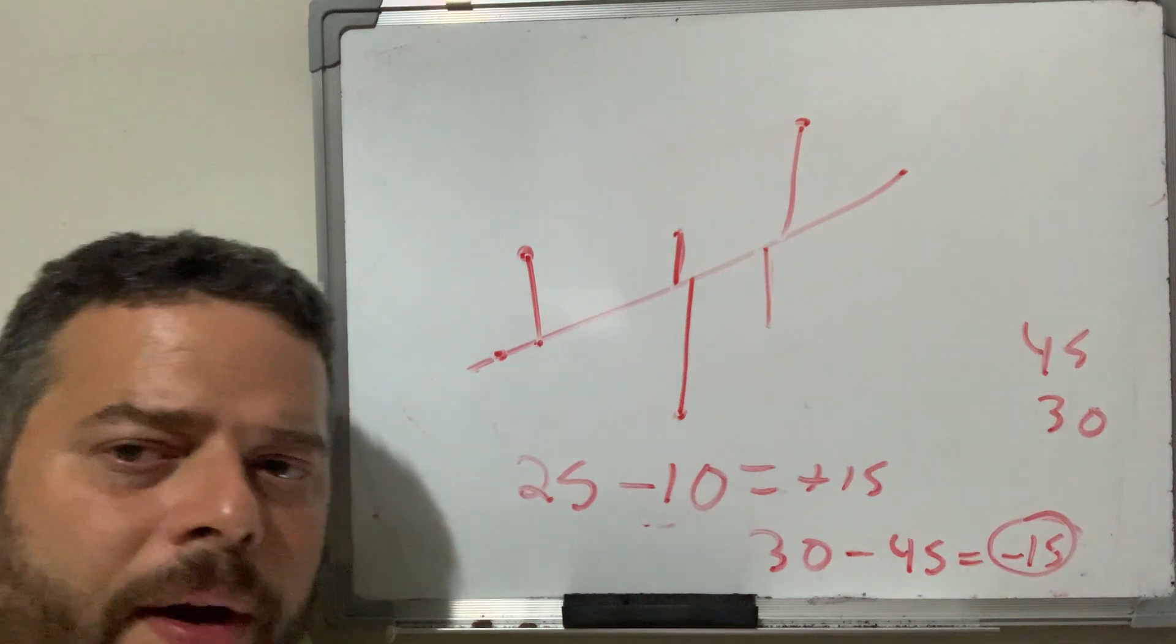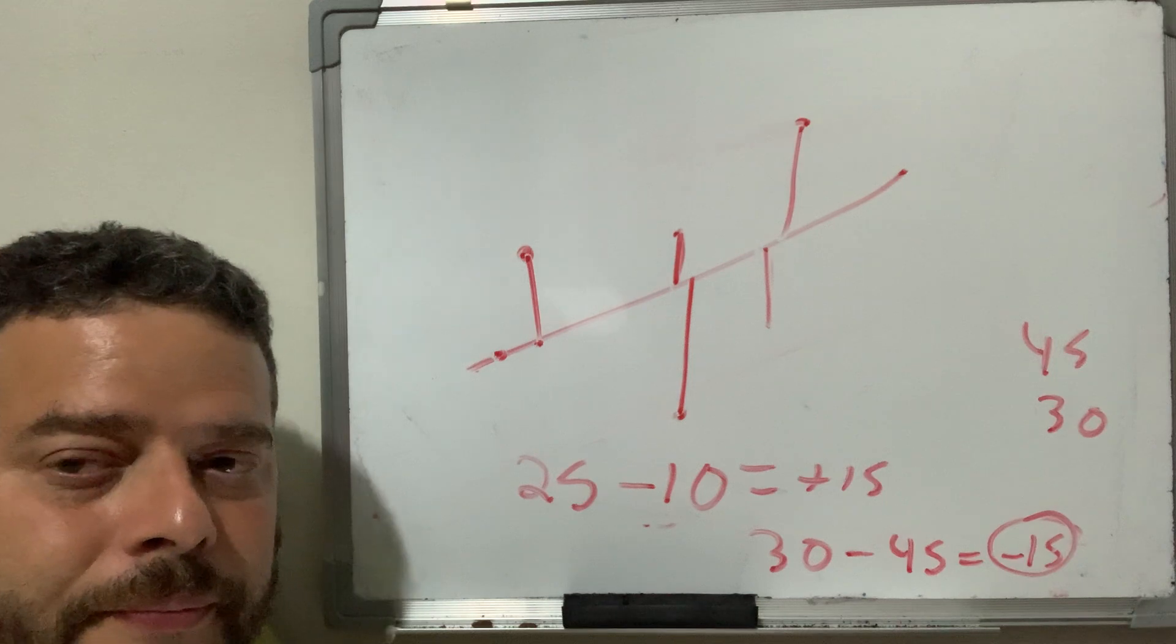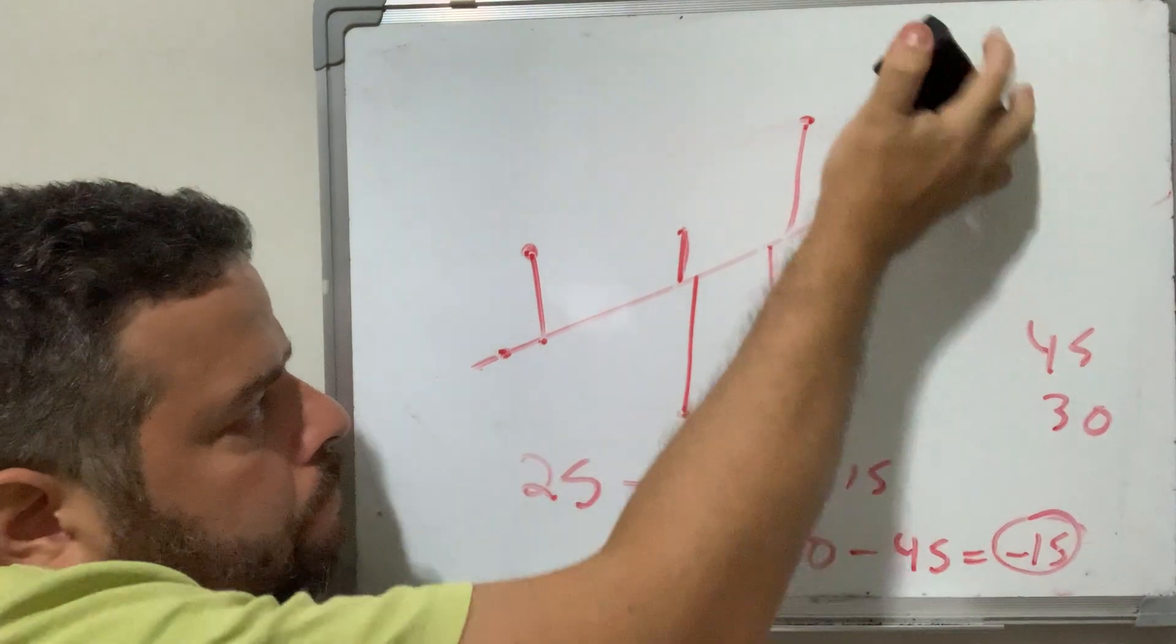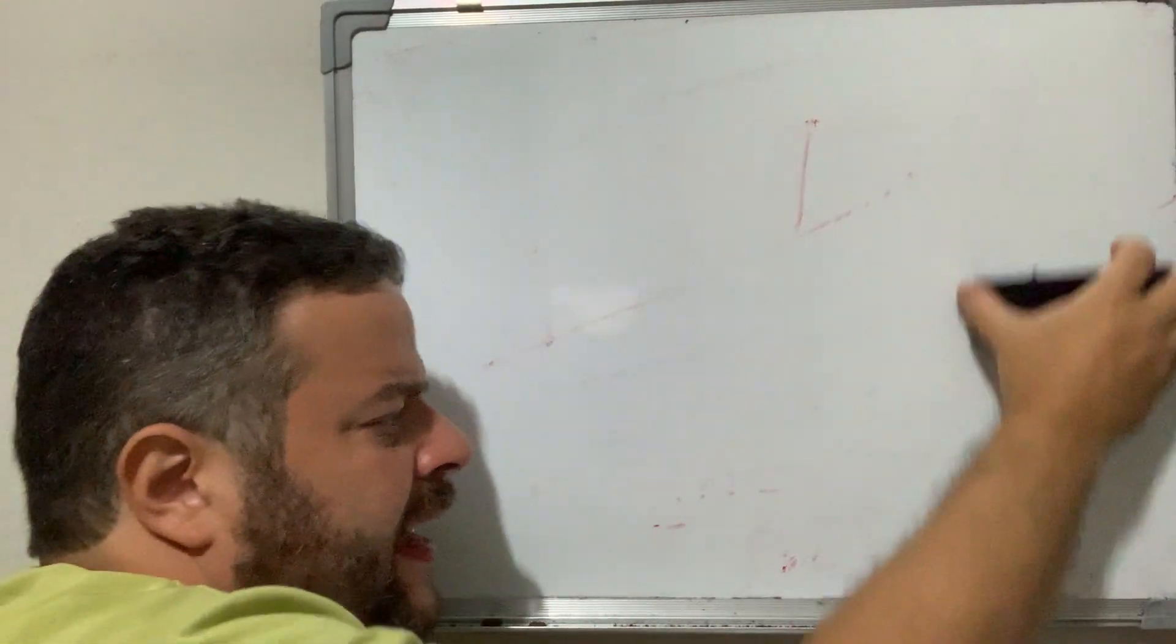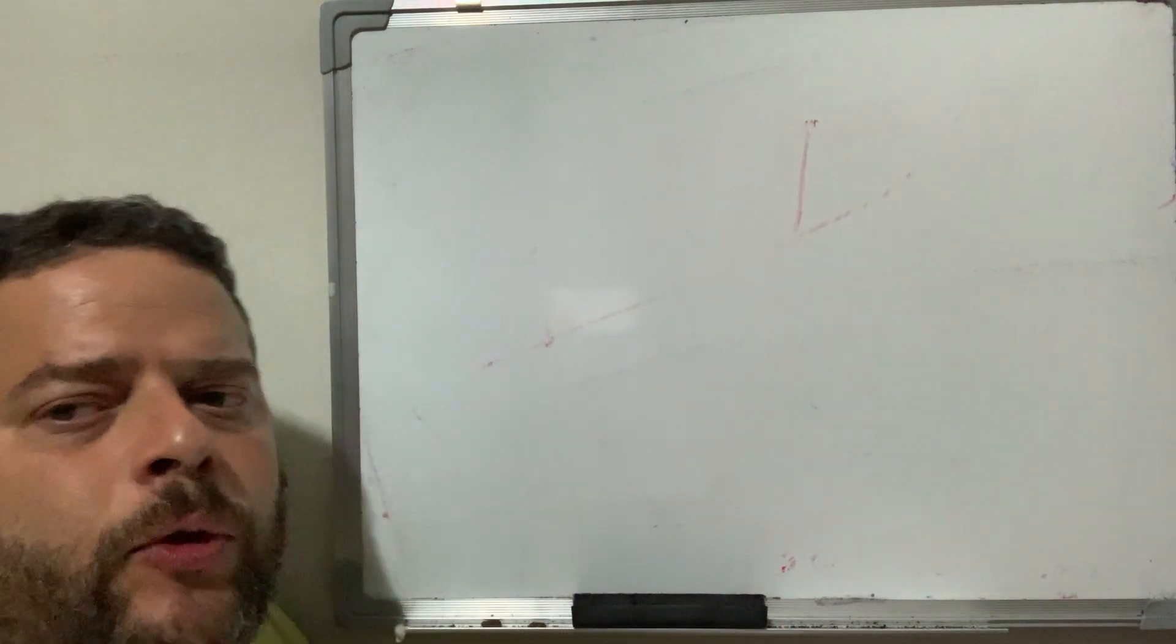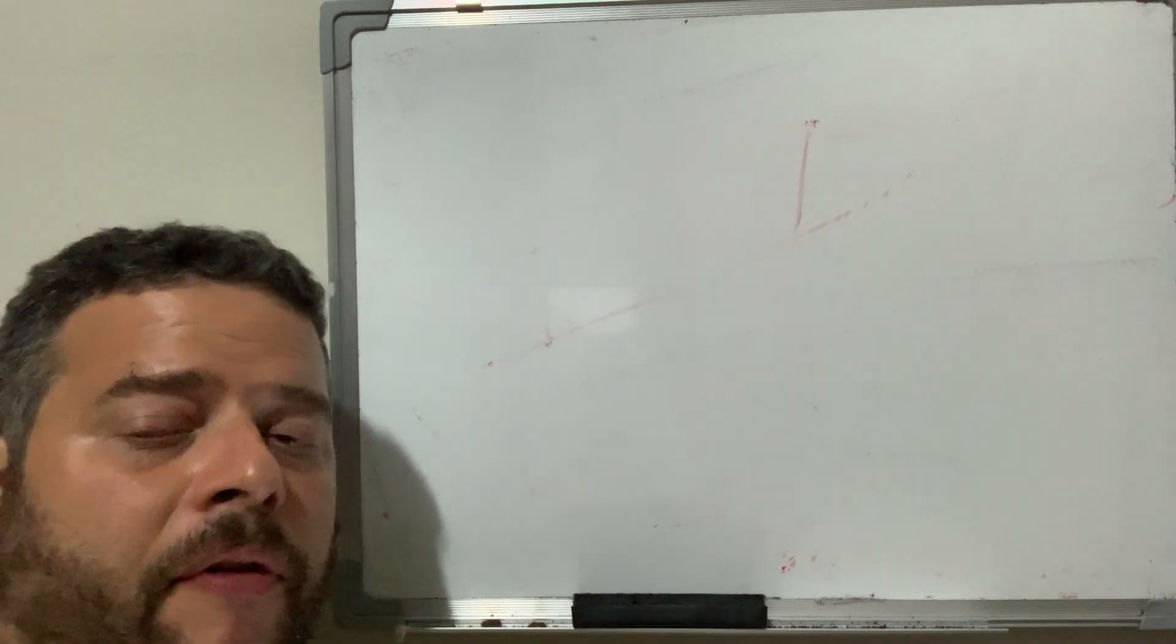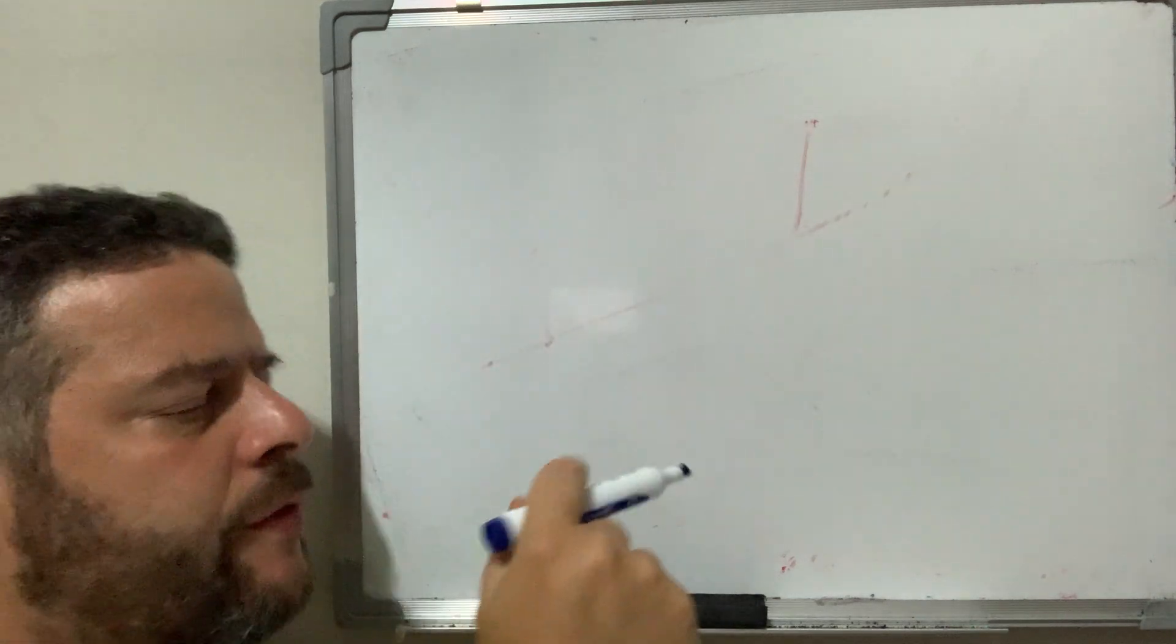And, least squares regression line. That's a fancy term for line of best fits. We square the residuals because we actually don't want negative residuals to cancel out positive residuals when we're adding all the errors of a line. That's why we square them and then add them to have absolute values of these errors or mispredictions.